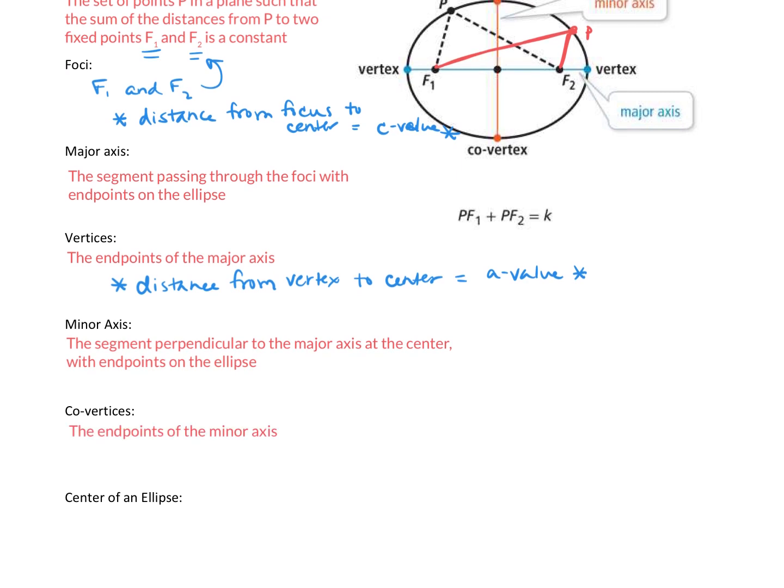So covertices we saw in the picture up there, those are the endpoints of the minor axis and we're going to add in the distance from the co-vertex to the center is going to be our B value.